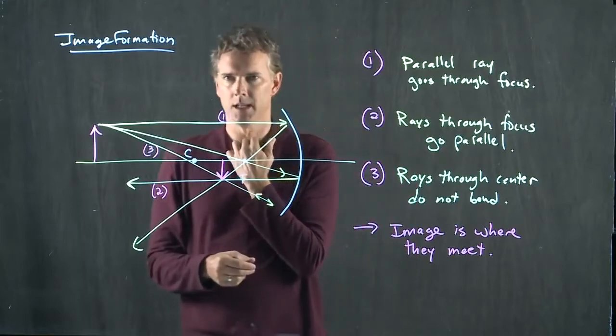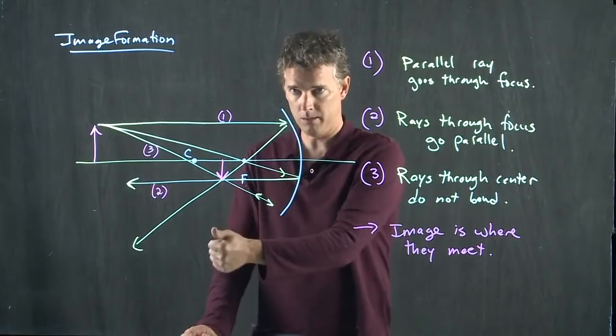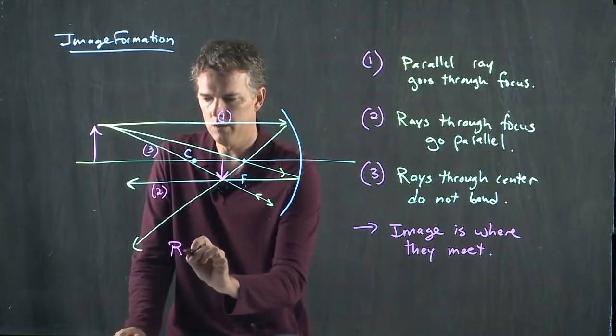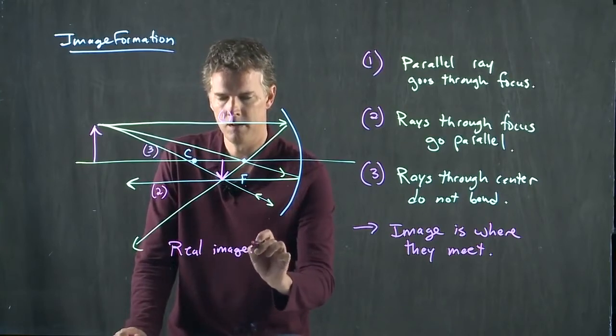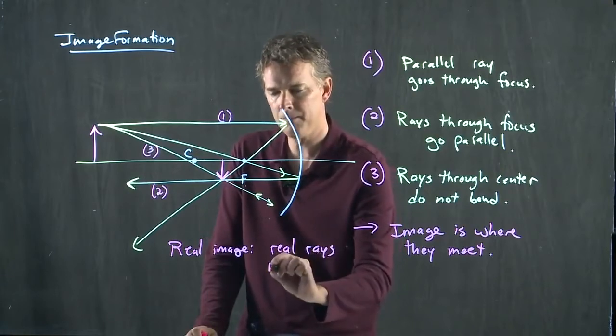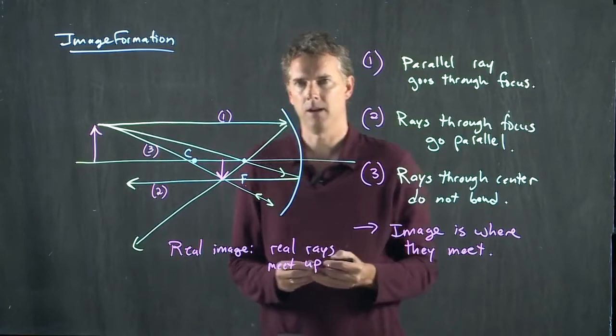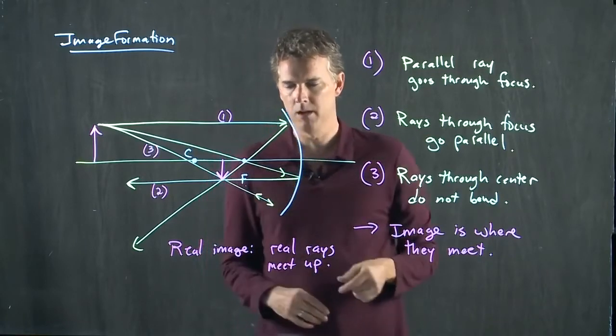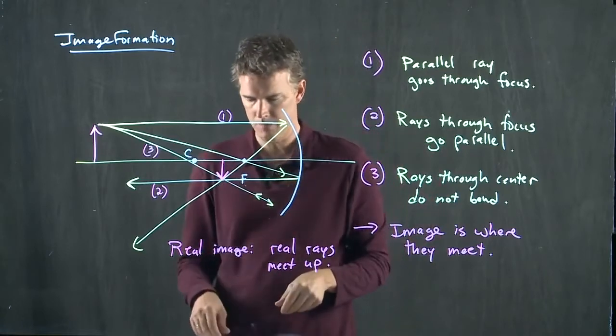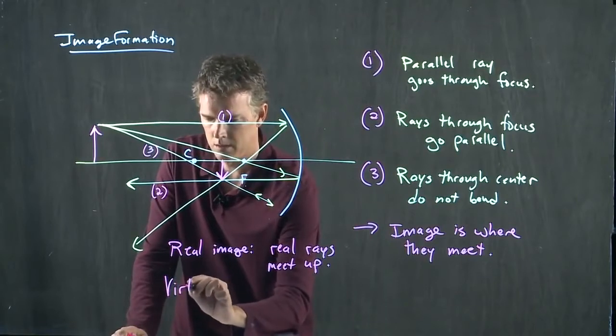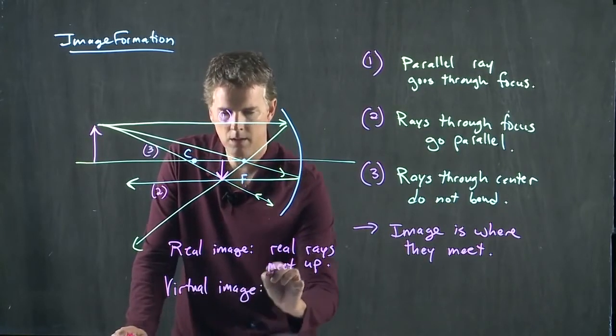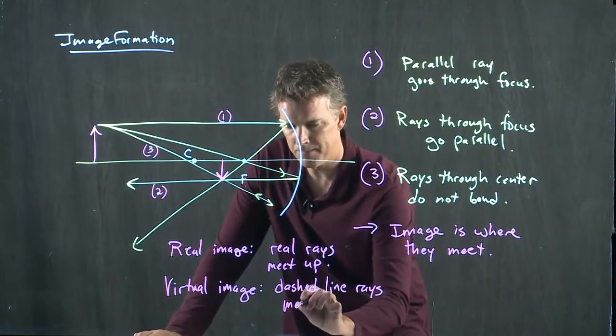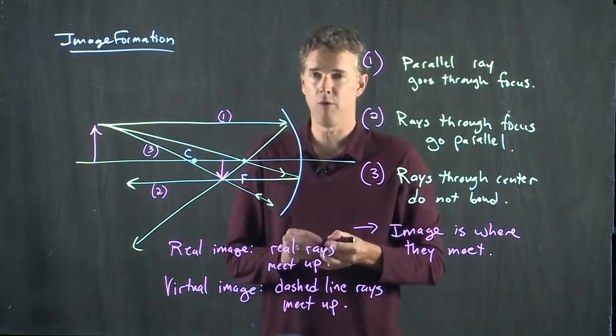Now when we have image formation like this, you have to classify it as either a real image or an imaginary image, a virtual image. Images are real when real rays meet up. In other words, could I put a piece of paper there and form an image on it because real rays are coming to meet up with it? Yes. Those three converging rays all meet right there. Virtual image is when the dashed line rays meet up.